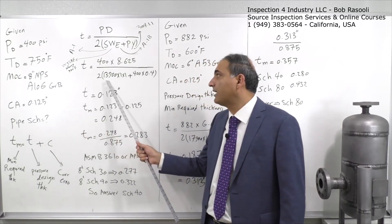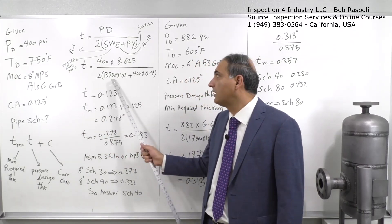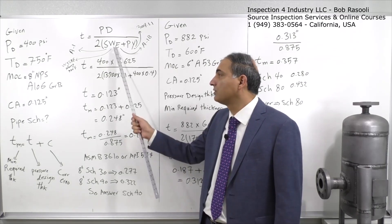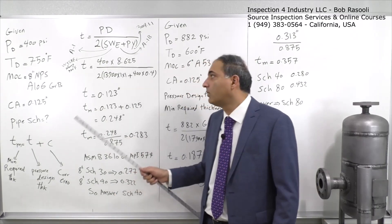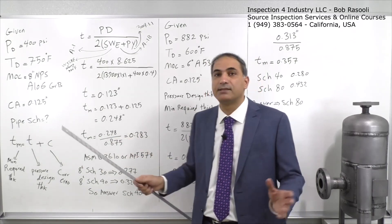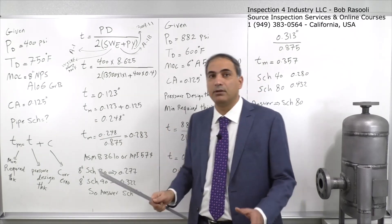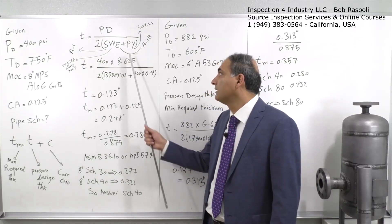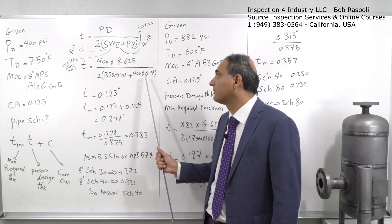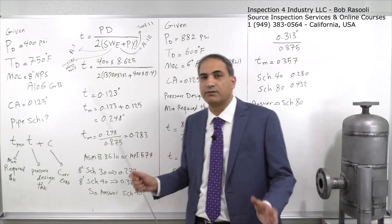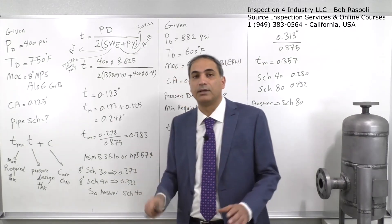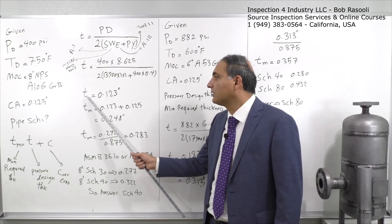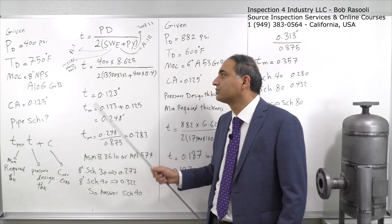Our W equals 1 since the temperature is below 900°F. The joint quality factor E also equals 1 because A106 Grade B is a seamless pipe. The Y coefficient, read from the table for our design temperature, is 0.4 — the most common value. Plugging all values into the formula, our pressure design thickness T comes out to 0.123 inches.